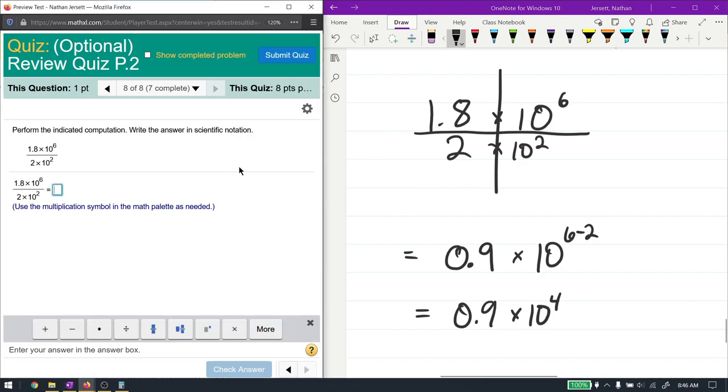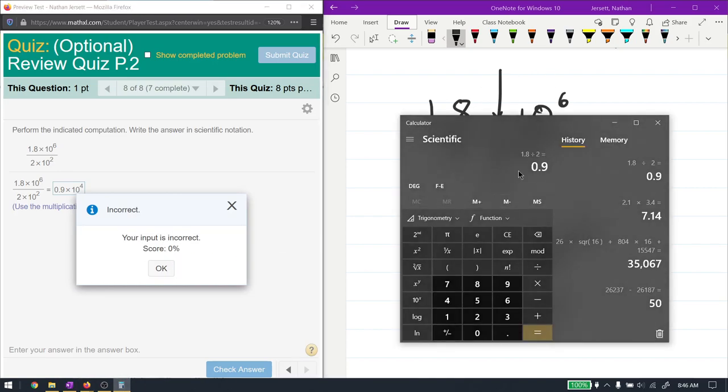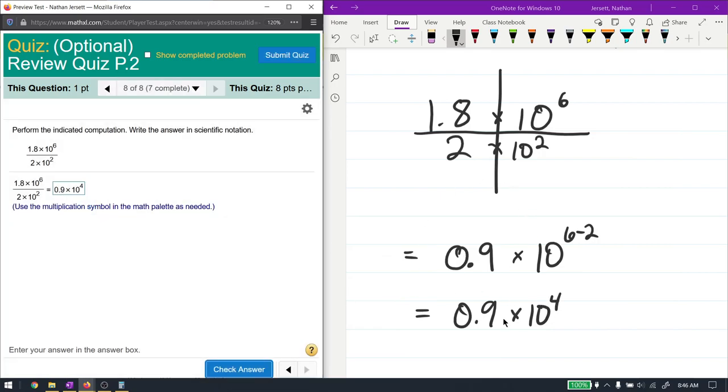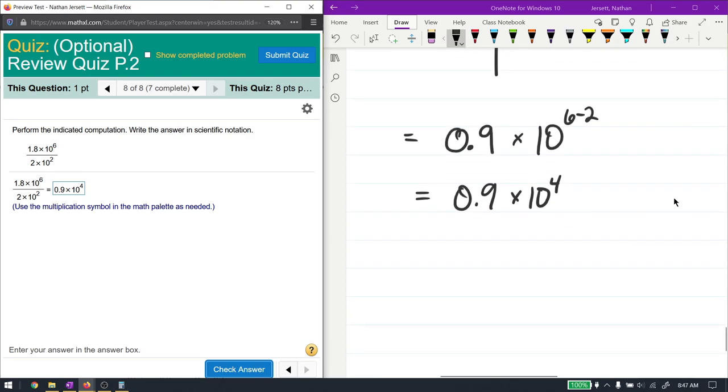Now, if you try this answer, times 10 to the power of 4, it is incorrect. So this process is correct. I didn't write the number down wrong. The reason why it's incorrect is because this is not scientific notation. The decimal must be after the first non-zero number. And 0 is the first number here. So that's incorrect.